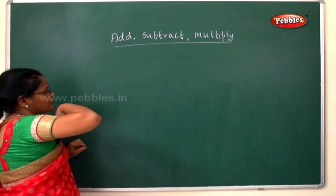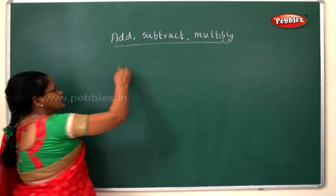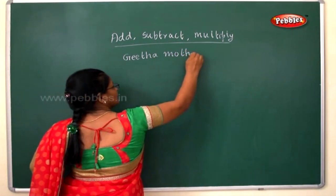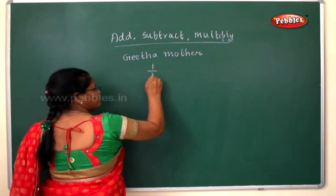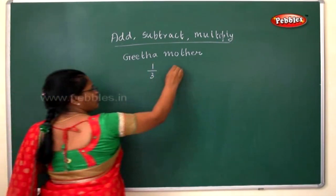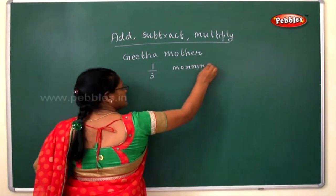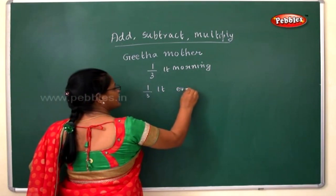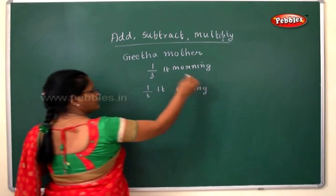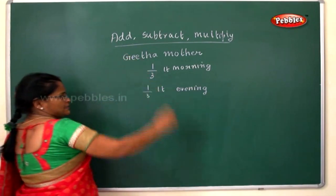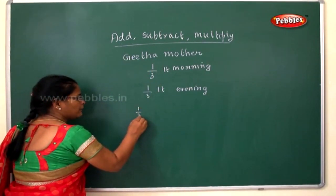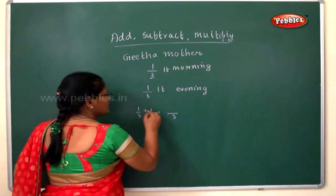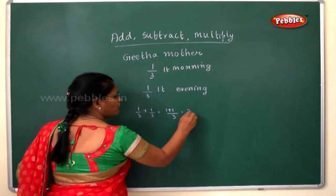With this related lesson, I will tell you a small story. Geeta's mother, in the morning, took 1/3 of milk and boiled it to make coffee. Then in the evening, she again took 1/3 liters. So what is the total quantity consumed by Geeta's mother? 1/3 plus 1/3 — since 3 is common, you write 3 as the denominator, and 1 plus 1 equals 2. So the answer is 2/3.